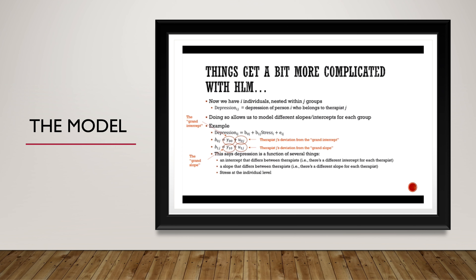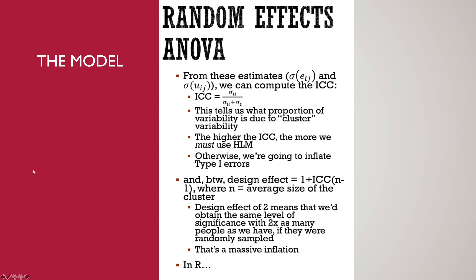So again, grand intercept and grand slope. From the estimates, sigma is the standard deviation of the errors and the standard deviation of the UIJs. We can compute what's called the intra-class correlation, or ICC. This ratio tells us the proportion of variability that is due to the cluster variable. The higher the ICC, the more we need HLMs — otherwise we're going to inflate our Type 1 error rates.